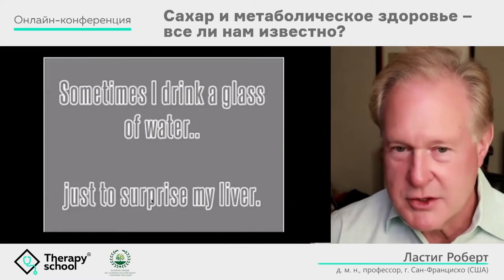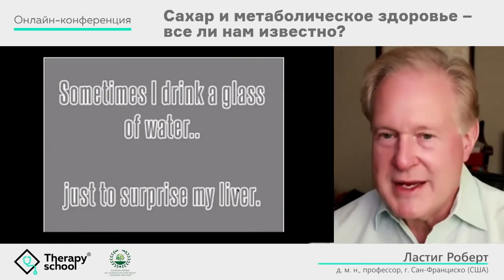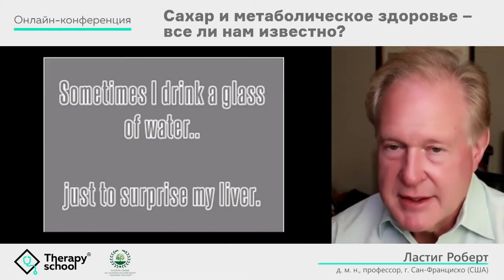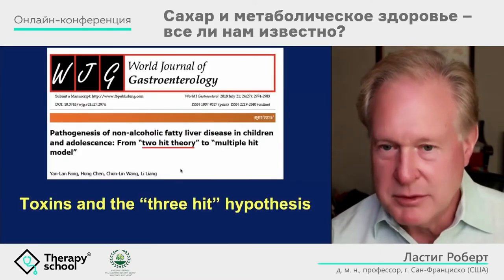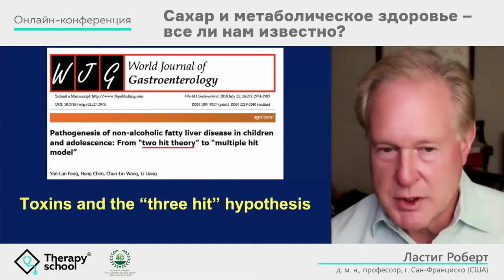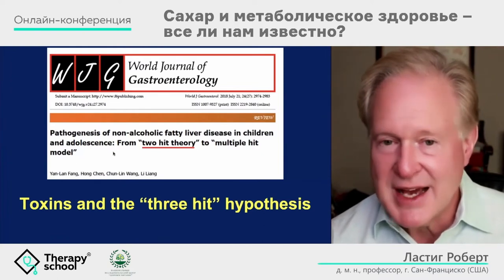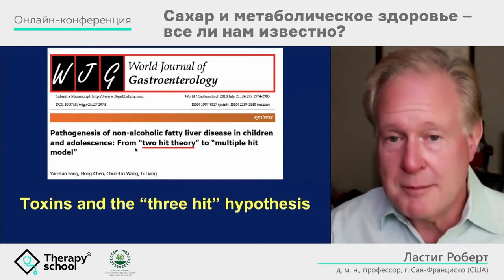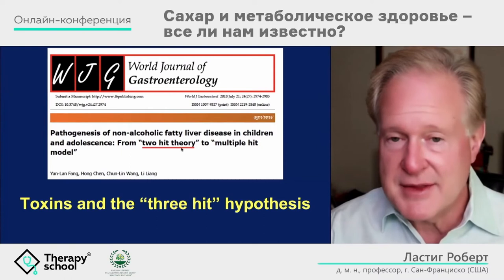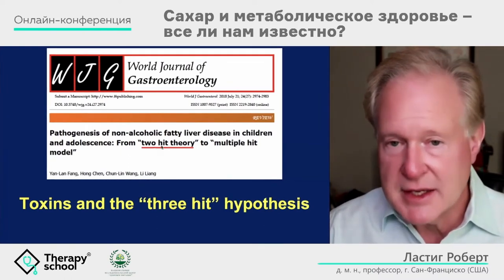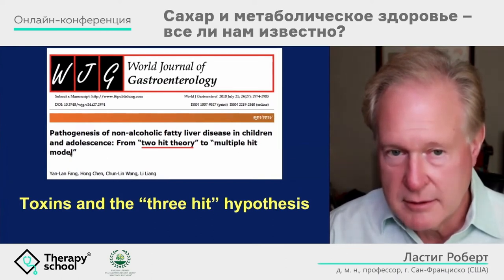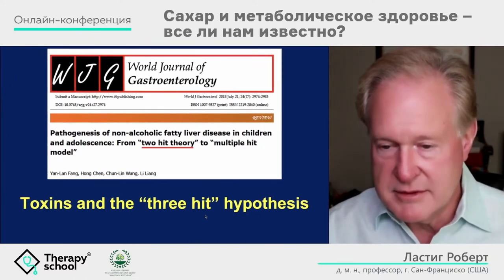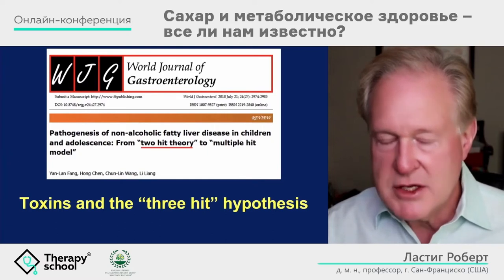What are we surprising our livers with? Sugar. In America, the problem is sugar, and I will show you why. We have to determine what toxins are generating the fatty liver. In the fatty liver literature, people talk about the two-hit theory: first you get the fat, then you get the inflammation. I am here to tell you it is the three-hit theory. There are three separate phenomena going on in the liver, each building on the previous one to generate metabolic syndrome.